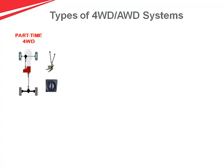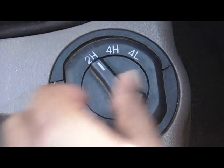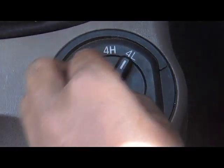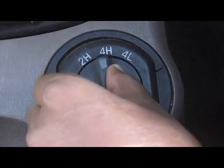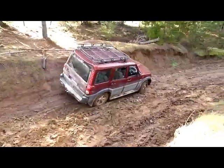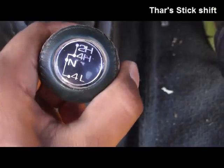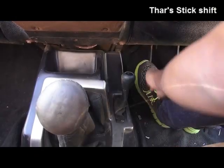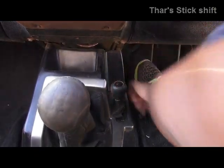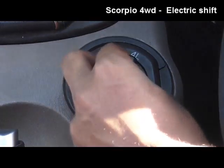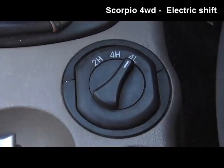First, we'll go through part-time four wheel drives. Here the driver decides the shifting — say whether he or she wants four high, four low, or two high. It all could be selected depending on which SUV you're driving. There could either be a stick shift or electric shift with which you do the shifting.